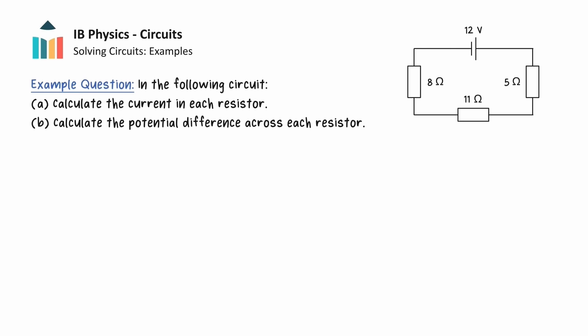We have a single loop circuit that contains one cell with a voltage of 12 volts and three resistors with resistances 5 ohms, 11 ohms, and 8 ohms that are connected in series.